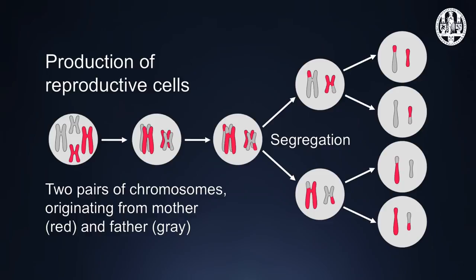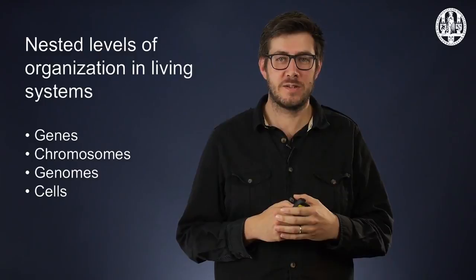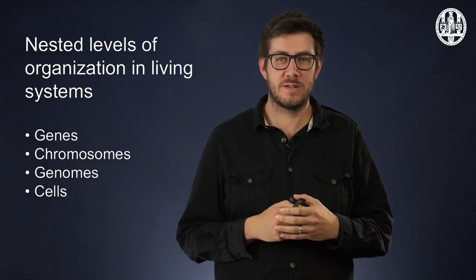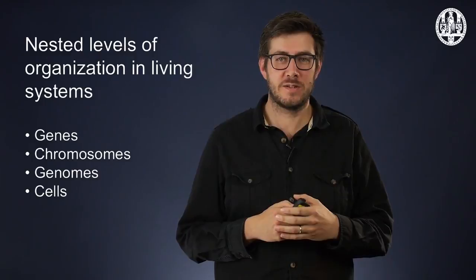In other words, one diploid cell randomly distributes one of each pair of chromosomes over two new cells, which then split again, to result in four reproductive cells. These reproductive cells are called sperm in males and eggs in females. When a sperm and an egg cell fuse, a diploid cell with a novel combination of chromosomes results.